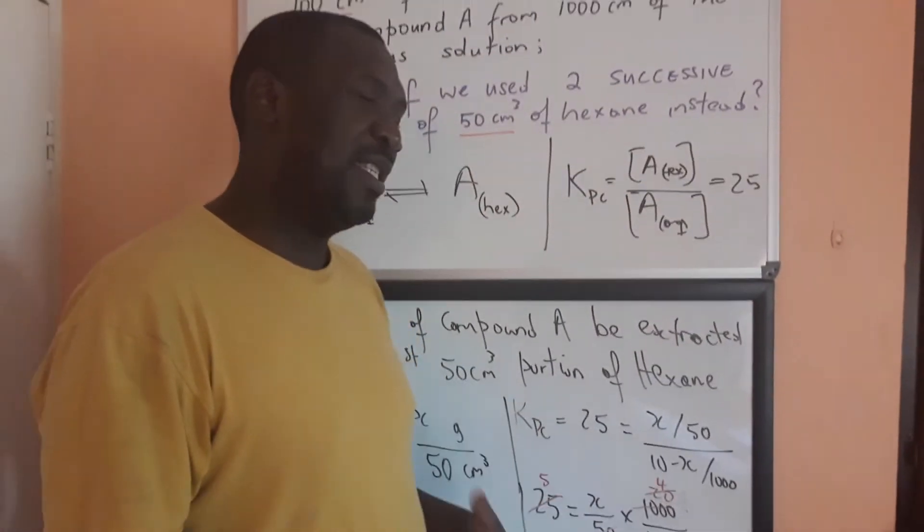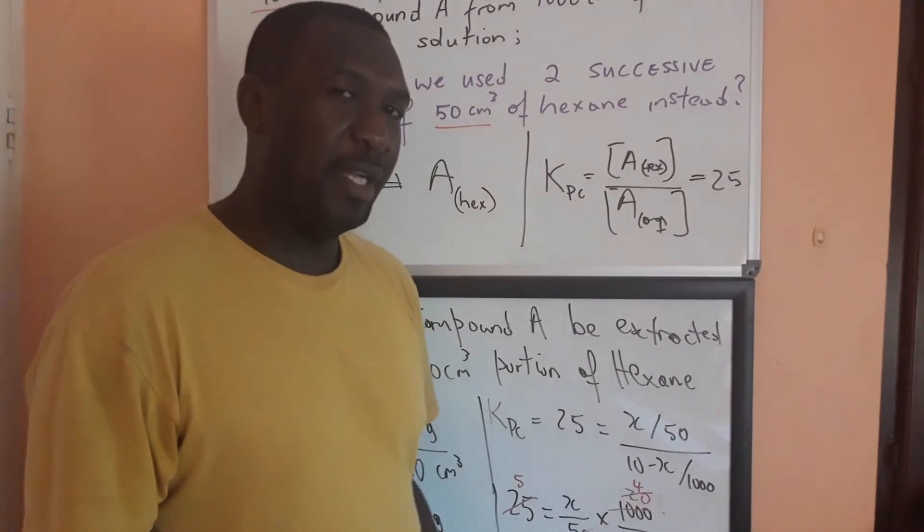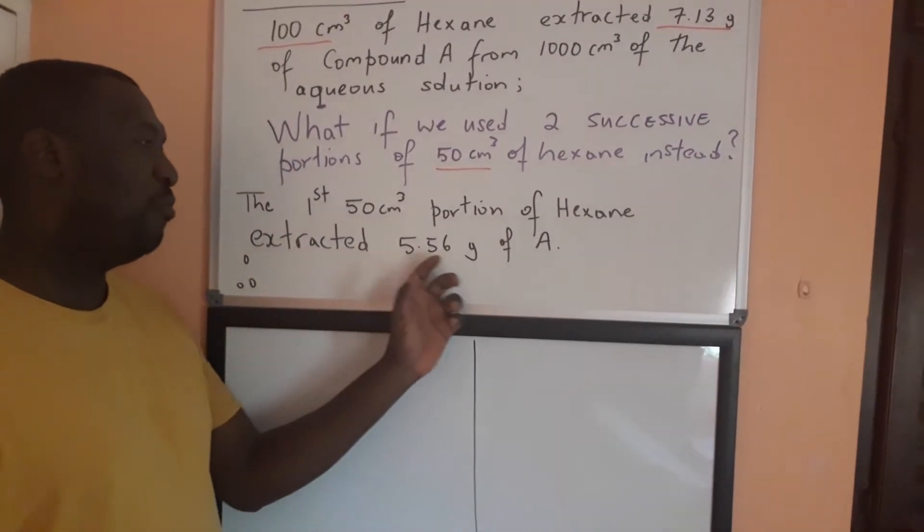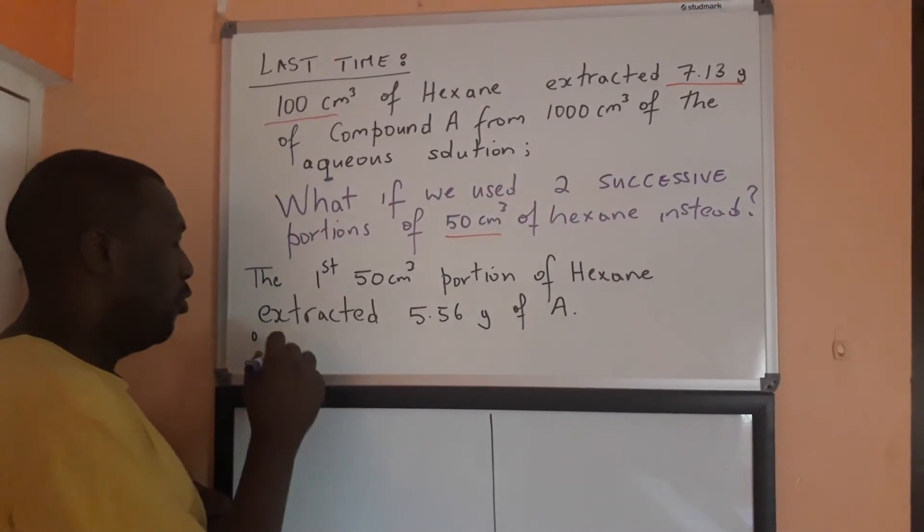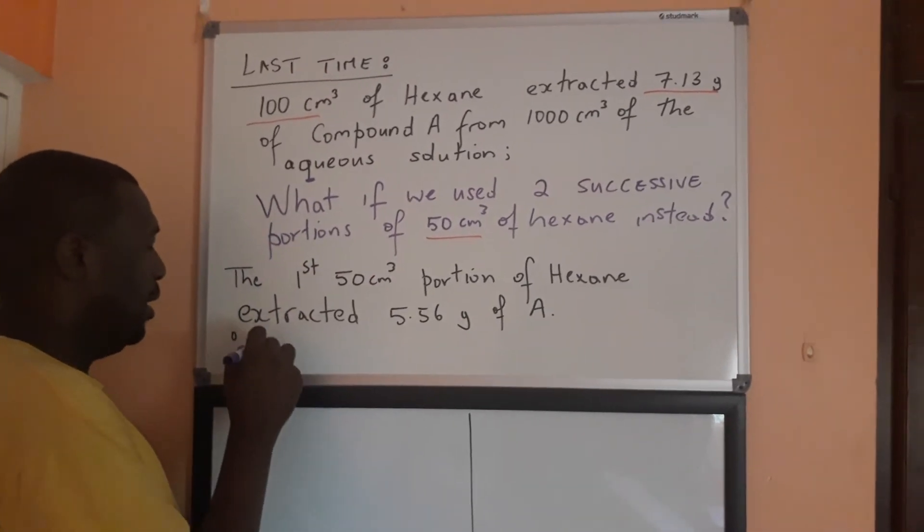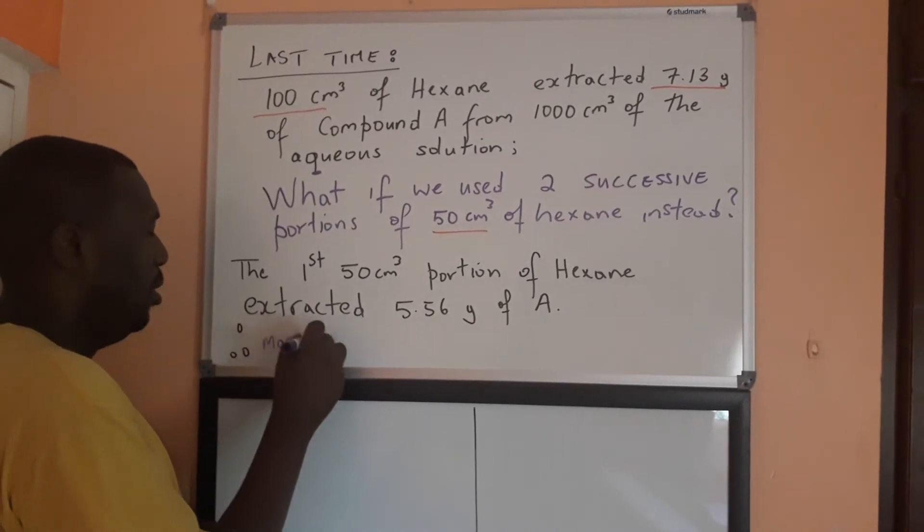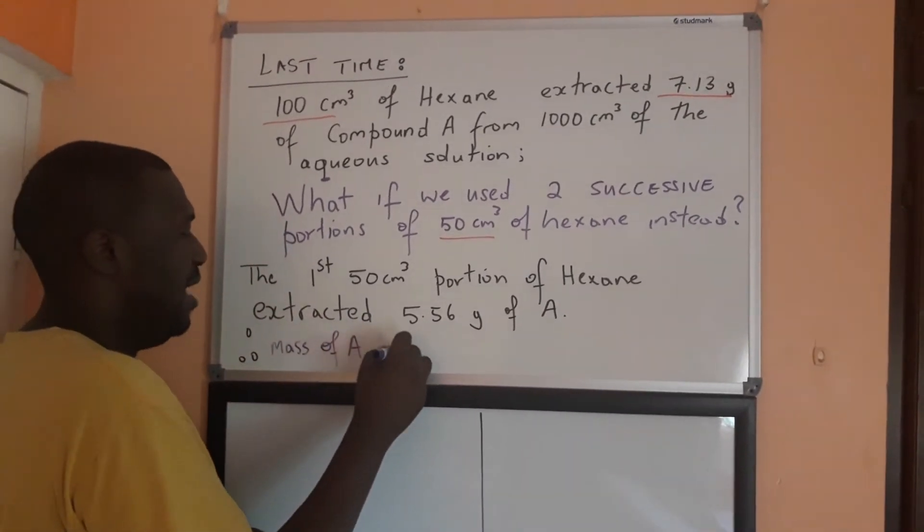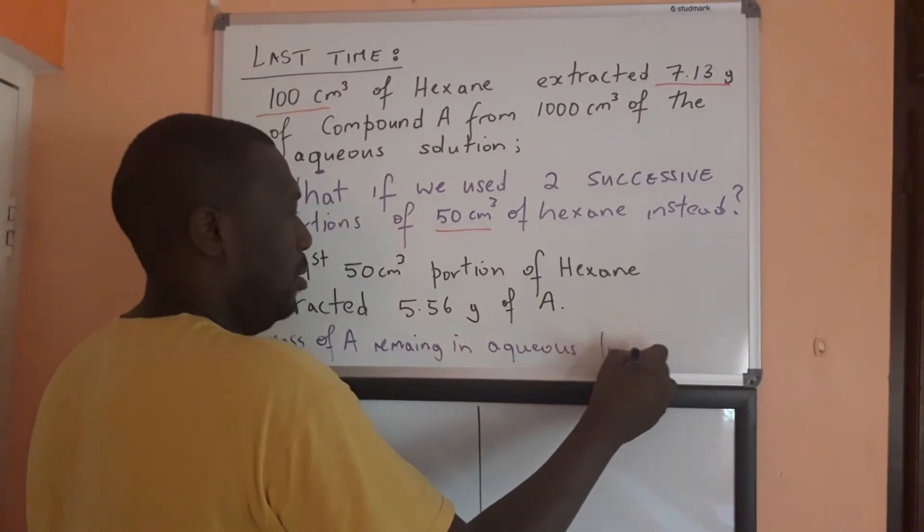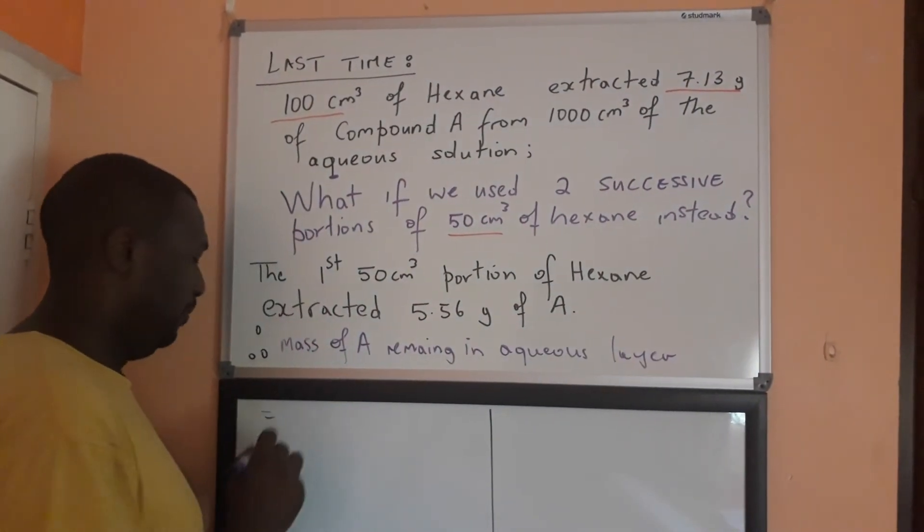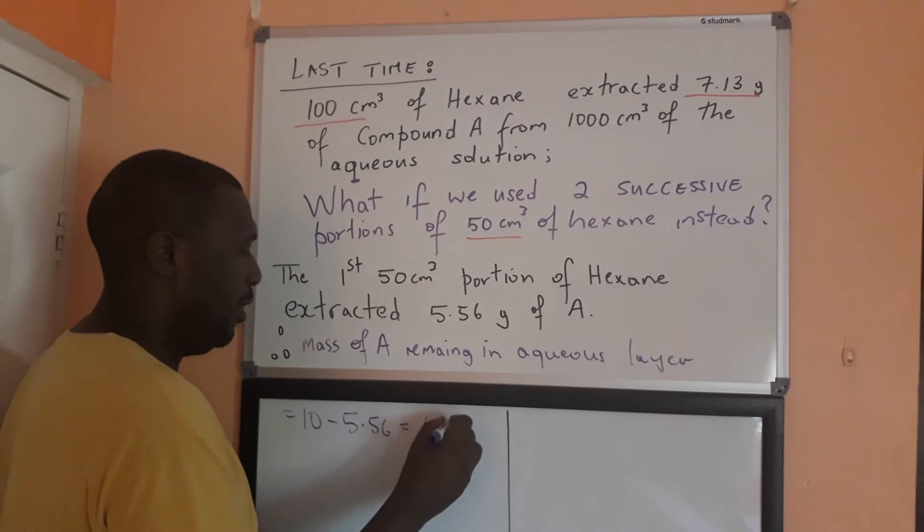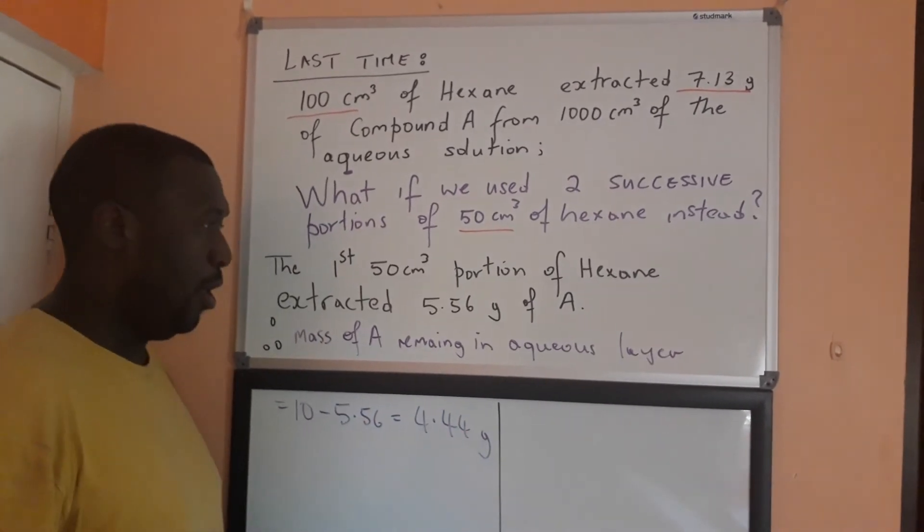Now, let's see, when we do our second portion, how much we're going to extract. So then, the first 50 centimeter cubed portion of hexane extracted 5.56 grams of A. Now, remember that originally, we had 10 grams of A in the aqueous layer. That means, the mass of A remaining in aqueous layer would be equal to 10 minus 5.56. That leaves 4.44 grams of A.